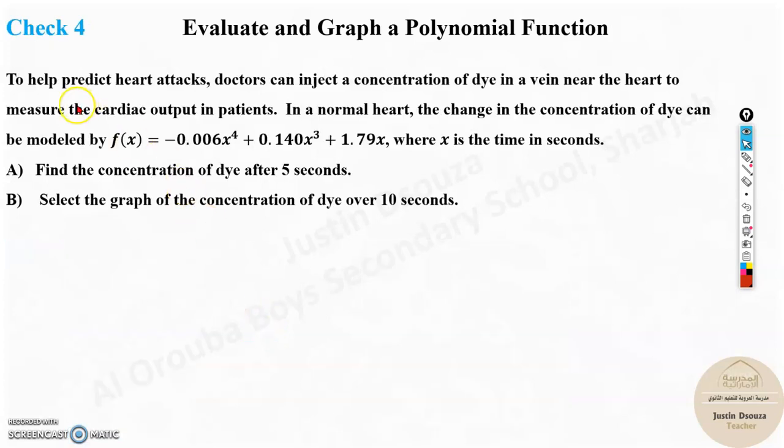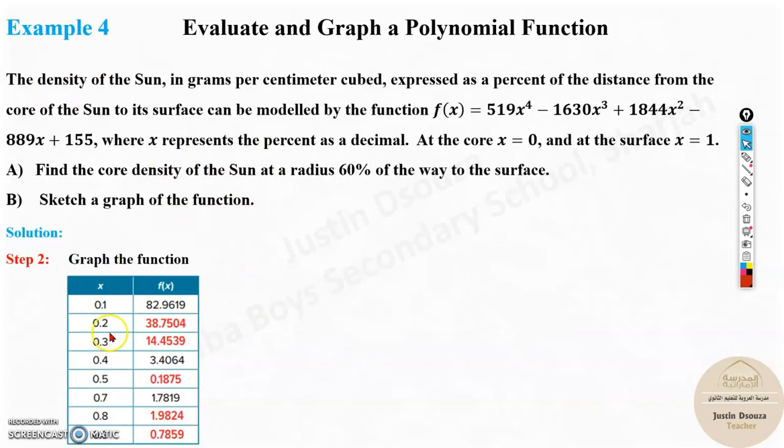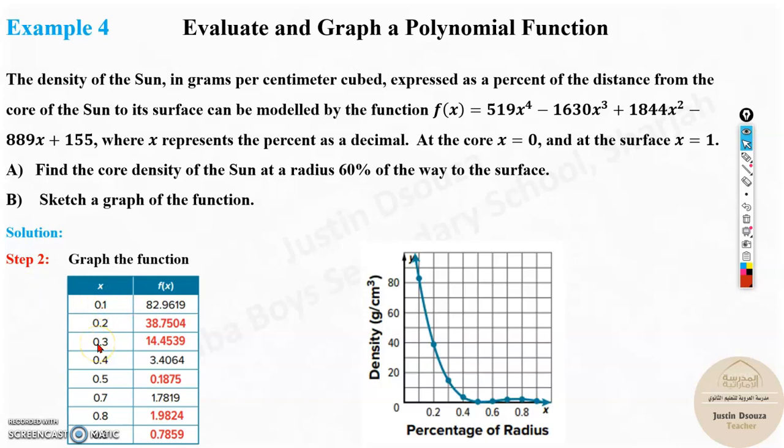This is one way to graph. We will do a similar problem, the next one, the check, but I'll tell you a shortcut to graph. Instead of all this, if you have the four options with you, there is a shortcut. If there's no option, then you have to graph just like what we have done before.